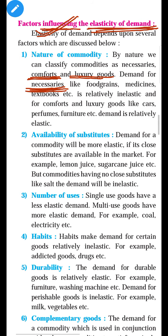Necessary goods — such as medicines, food grains, and textbooks — have relatively inelastic demand. A large change in price brings only a small change in demand. Price changes more, demand changes less, and the slope of demand is steeper. So the first factor covers two main goods: luxury goods (relatively elastic) and necessary goods (relatively inelastic).